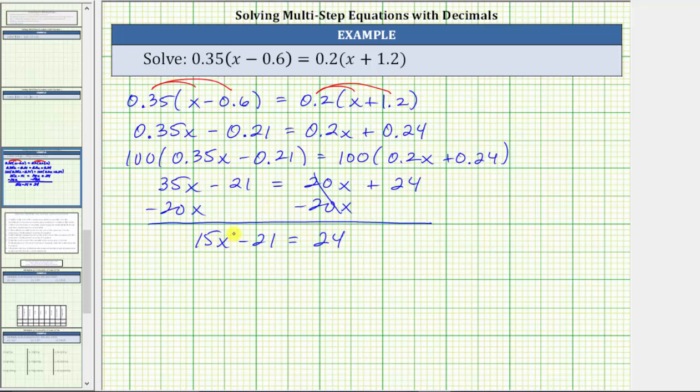Again, we still need to isolate the variable term 15x by collecting the constant terms on the other side. To isolate 15x, we need to undo minus 21 by adding 21 to both sides of the equation. Simplifying, negative 21 plus 21 is zero, which again is the reason why we added 21 to both sides. We now have 15x equals 24 plus 21 is 45.